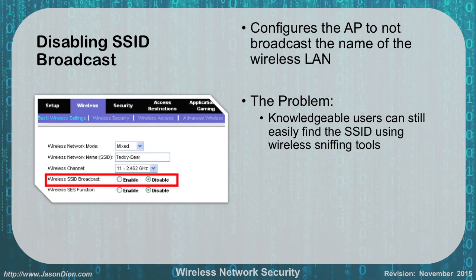Disabling your SSID broadcast — again, the Network+ exam says this is a good security practice. In reality, knowledgeable users can easily find a hidden SSID using wireless sniffing tools, just like finding a MAC address, because the SSID still appears in traffic between clients and the access point. The only difference is that the access point won't appear in the list of available networks in Windows. Someone who doesn't know what they're doing won't see your network, but someone who does will find it quickly. It's one additional step, but not the most effective.